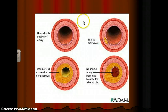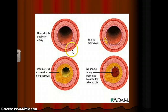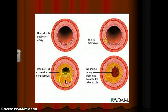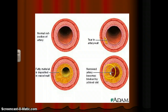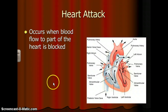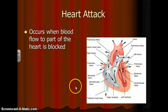Here's another picture of a normal section of an artery, and then here's an artery that's been clogged up, so you can see the blood flow is greatly restricted. We also have heart attack, which occurs when blood flow to part of the heart is blocked — that can happen in any of the parts of the heart.